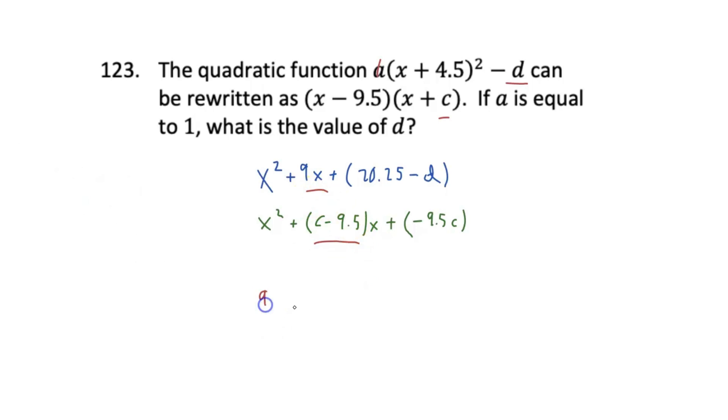9 is our b value. And then we have c - 9.5 in the other function. And now we can solve for c. And so c here would be 18.5. So now that we know the c value, this makes the problem super easy because we see we have this c value in here.